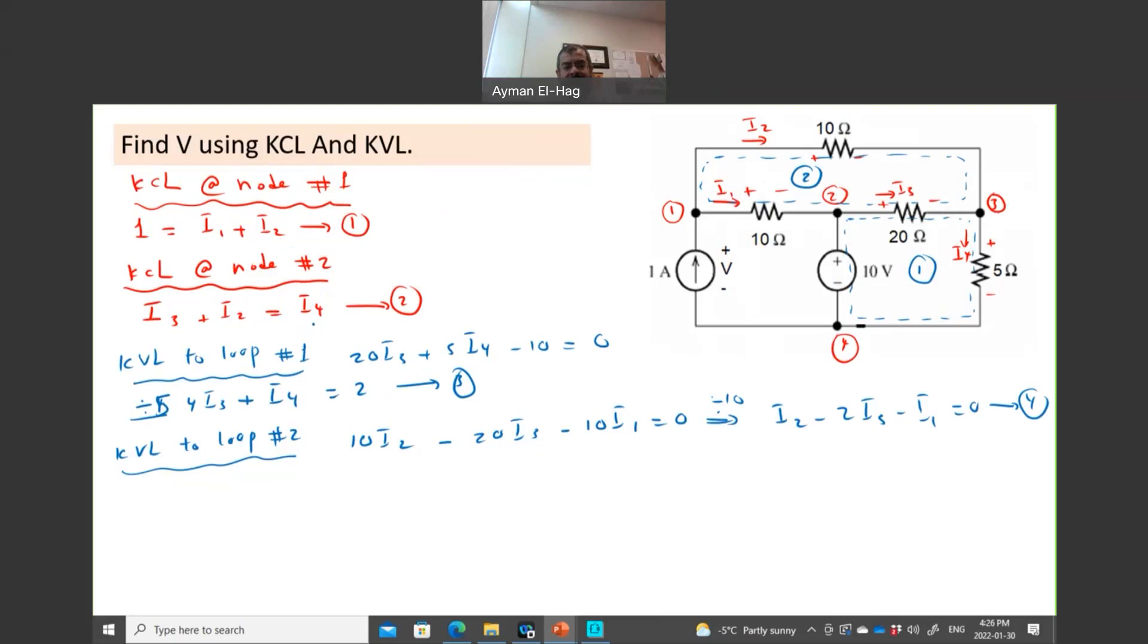So now, how will we deal with this? One thing we can do is to eliminate I4. In the first equation, we don't have I4. The second, we have. In the third, we have. And in the fourth, we don't have. So we can eliminate. We know I4 is equal to I3 plus I2. So I can substitute 2 and 3 to eliminate I4.